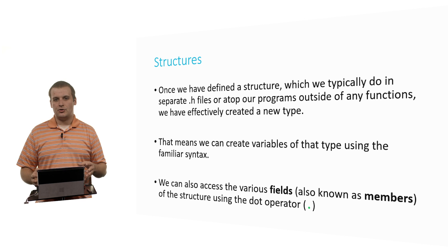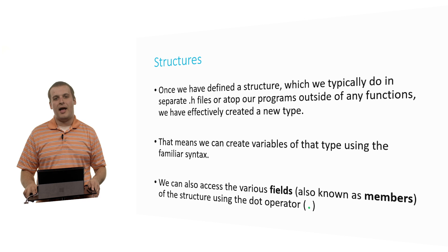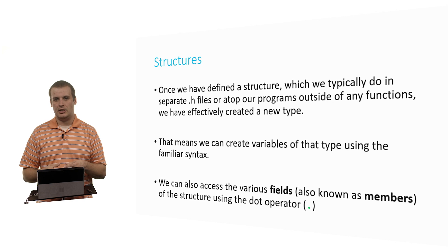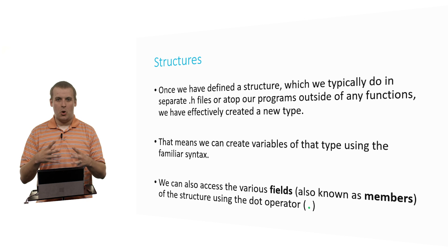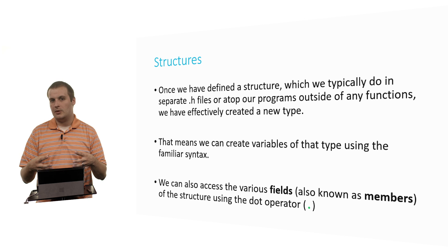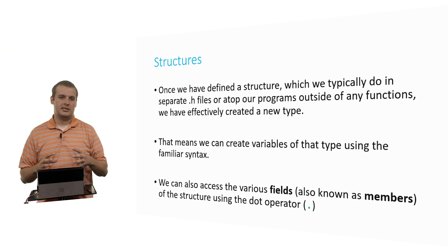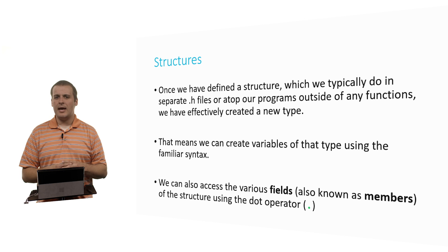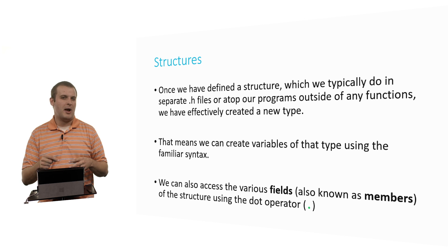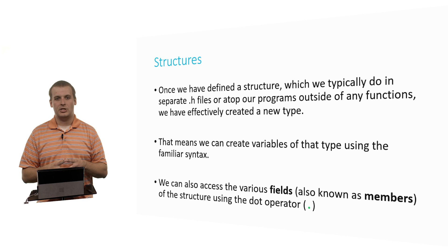We usually define our structures at the very top of our programs because they're probably going to be used by multiple functions. We don't want to define a struct inside of a function because then the scope of the structure really only exists inside of that function. We probably want to define a structure so we can use it in multiple functions, or perhaps in multiple files that are tied together to create our single program. Sometimes also, instead of defining the structure at the very top, where you put your pound includes and your pound defines, you might put them in separate .h files, which you then pound include yourself.